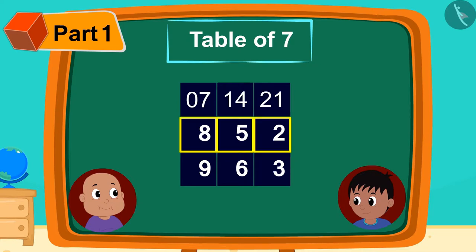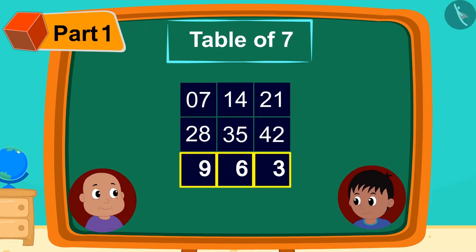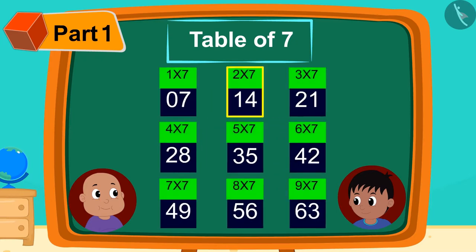Then next to the digits in the second line, he wrote 2, 3, 4. And in front of the digits of the third line, he wrote 4, 5, 6. Here we have our table of 7 ready.